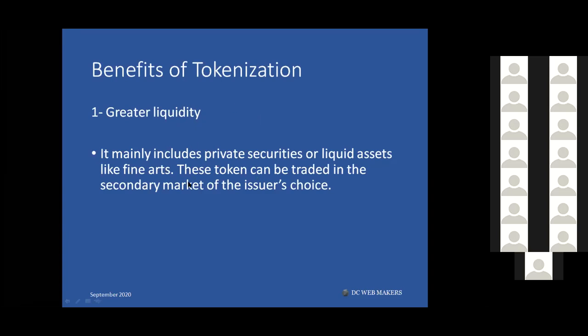If you're dealing with assets that are not liquid, you can use tokenization to diversify the risk and allow multiple owners. For example, if I only have five thousand dollars and want to invest in real estate, I can buy 20 tokens of a commercial real estate property. I can then trade those in the secondary market. I'm taking less risk because if something goes wrong, I'm only losing five thousand dollars.